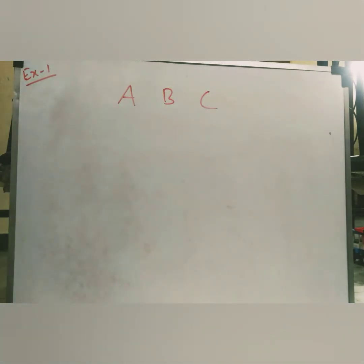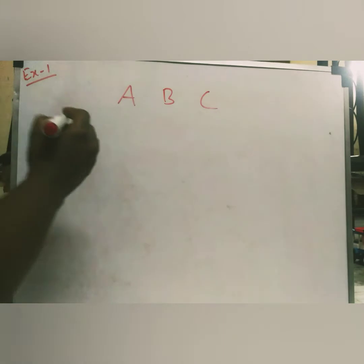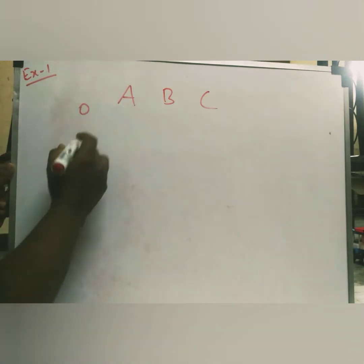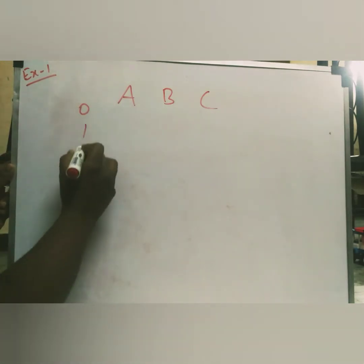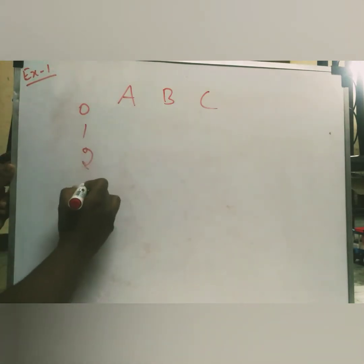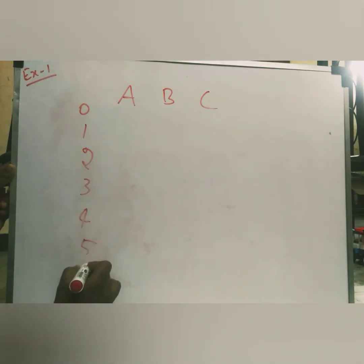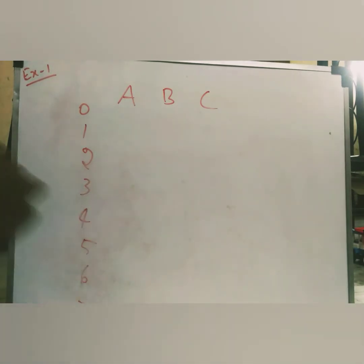For three variables, you get eight combinations — decimal values 0 through 7. We list them: 0, 1, 2, 3, 4, 5, 6, 7.